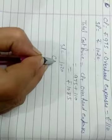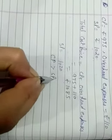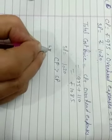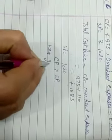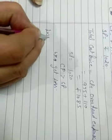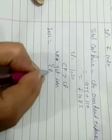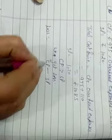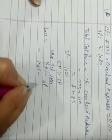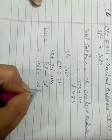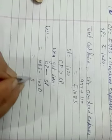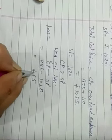So cost price is greater than SP. If cost price is greater than SP, we get loss. So write the formula of loss: loss is equal to CP minus SP. CP is equal to 1085, SP is equal to 1020. 5 minus 0 is 5, 8 minus 2 is 6. So rupees how many? Rupees 65 loss.